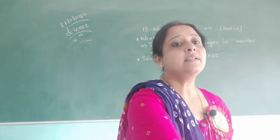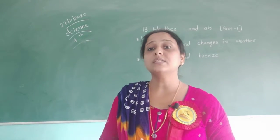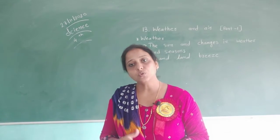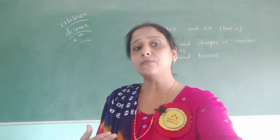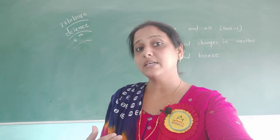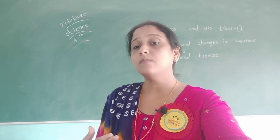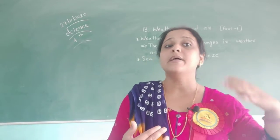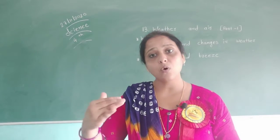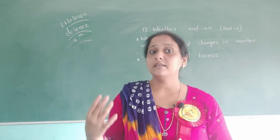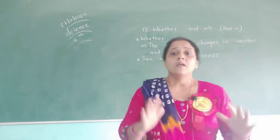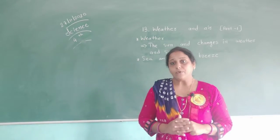The sun is also responsible for rain. Water in rivers and seas evaporates because of the heat of the sun and forms water vapor. These water vapors combine and form clouds. When clouds become heavy, they fall as rain. Sometimes these water drops freeze and fall as snow.